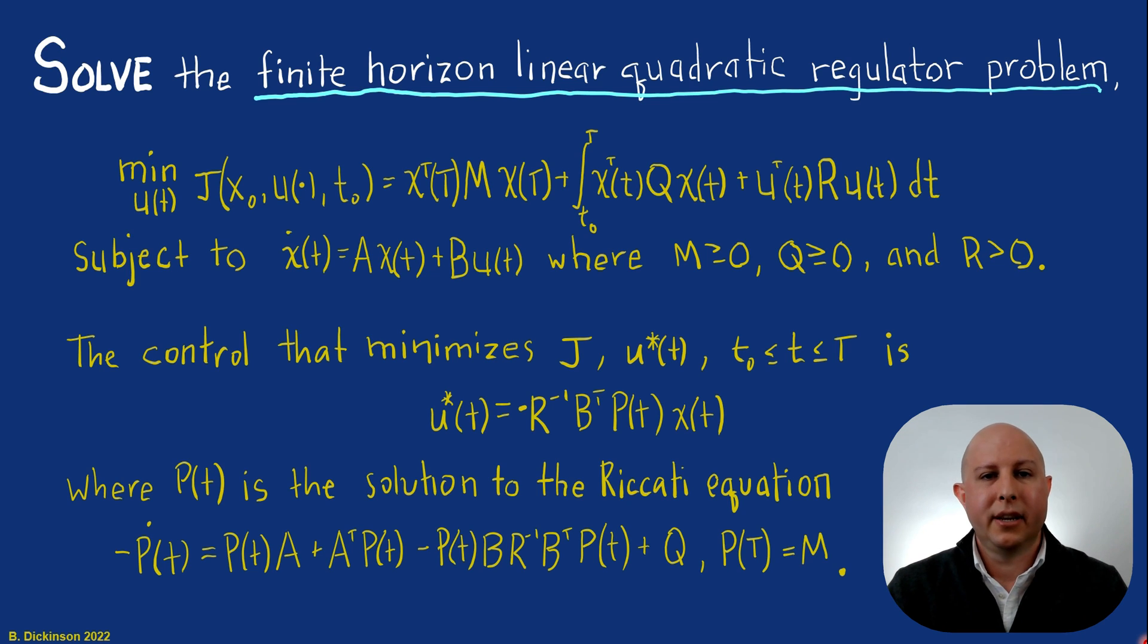Finally, note that this is a state feedback guidance law. It depends on the state X. And X has what in it? It has Z1, has Z2. That's the same as before. But crucially now we have Z3. Z3 is the target acceleration.